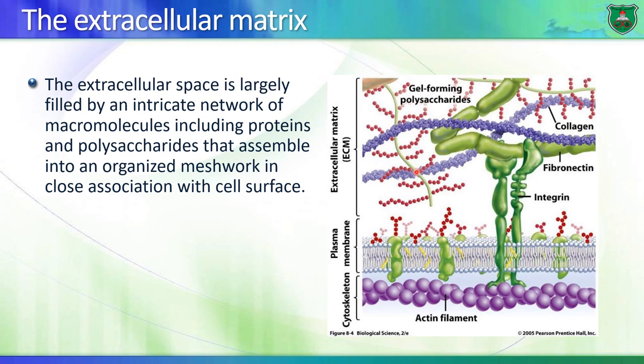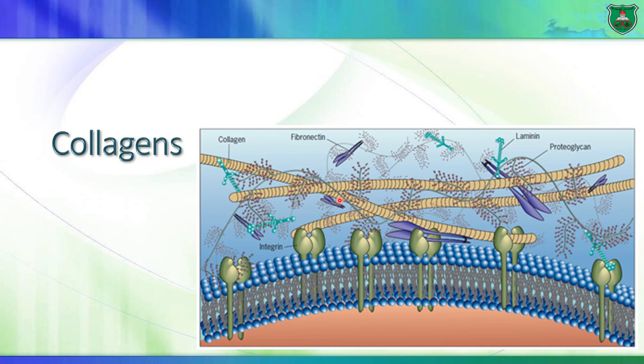Among the different matrix proteins that exist outside of cells, you have collagen — a large, elongated, thick protein. So let's start talking about collagens. These collagens are thick, elongated molecules. There are different shapes as well, but that's the typical structure of collagens.